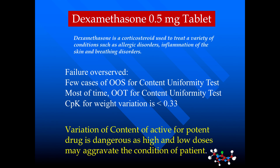Here is a tablet called dexamethasone 0.5 milligram — the dose is very low at 500 micrograms. Dexamethasone is a corticosteroid used to treat a variety of conditions such as allergic disorders, inflammation of the skin, and breathing disorders. In the manufacturing process, we are getting a few cases of out-of-specification results for the content uniformity test. Most of the time the content uniformity is out of trend, or the weight variation is very high, with a CPK for weight variation less than 0.33.